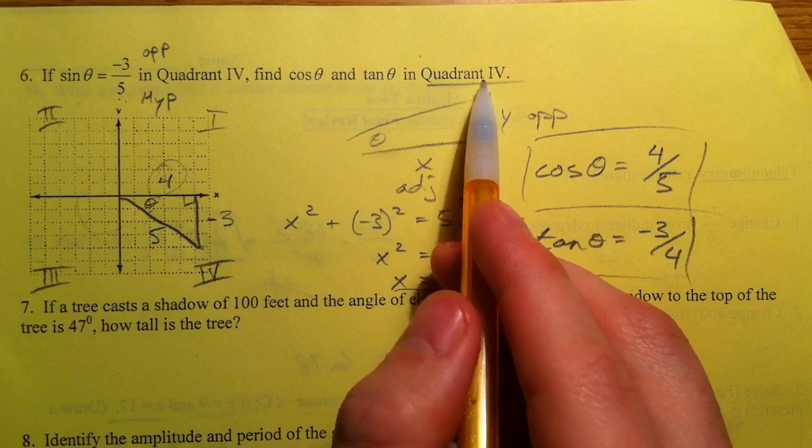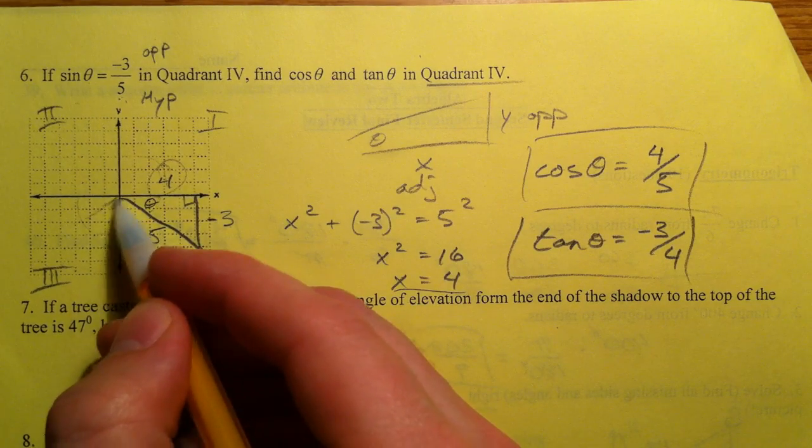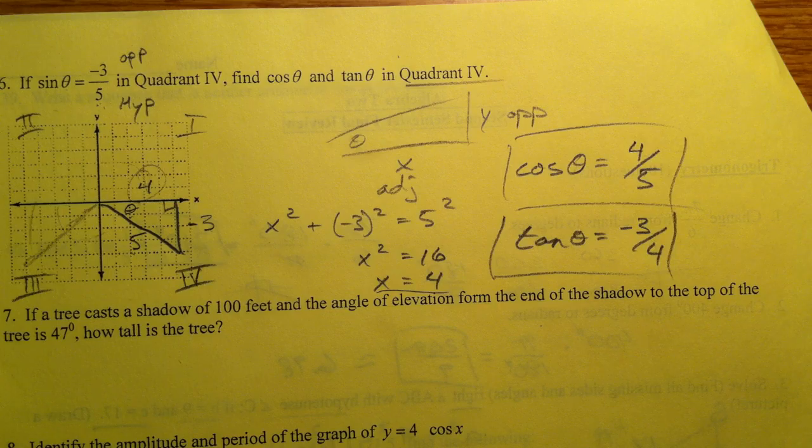Now, had they not given us quadrant 4, sine is also negative over here, and so you have to weed that one out.